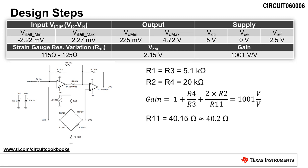which avoids degrading the instrumentation amplifier's common mode rejection ratio, or CMRR. For this design, we will select R1 and R3 equal to 5.1 kilo ohms, and R2 and R4 equal to 20 kilo ohms.